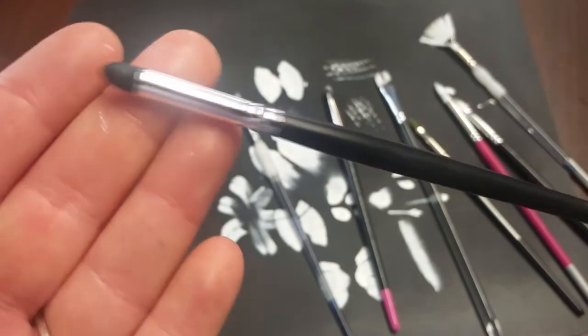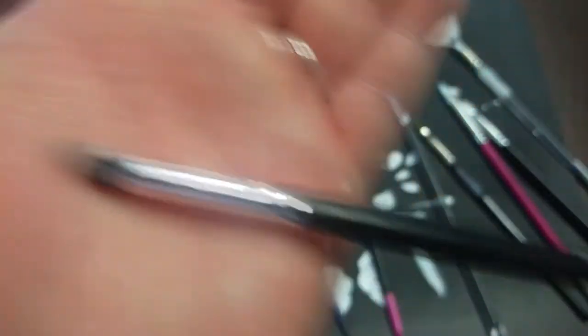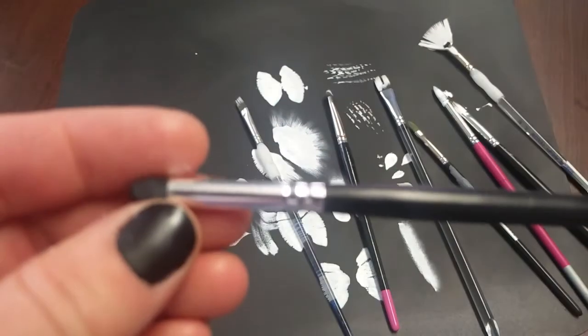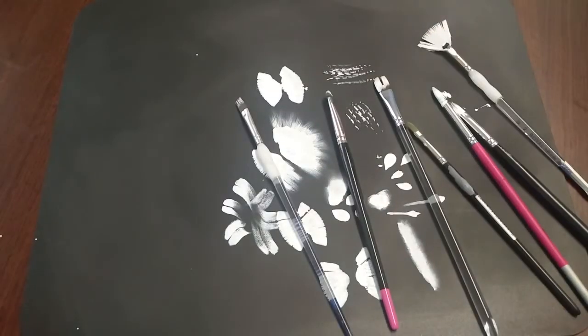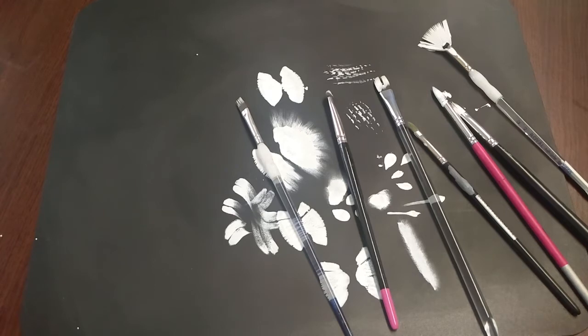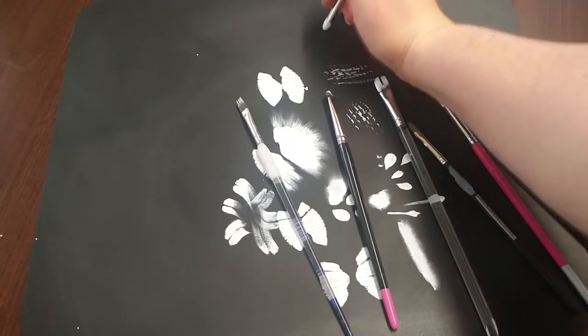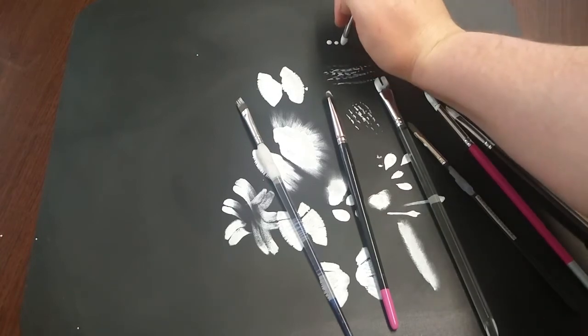The last brush I'm going to show you today is the dotter. This is actually a sponge head - it has a sponge applicator at the top, and it's used a lot for people who perhaps don't get on so well with using a round brush or a liner brush for their dotting. I personally prefer a liner for my dotting. I don't use this one very often, so I'm probably out of practice.